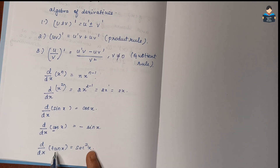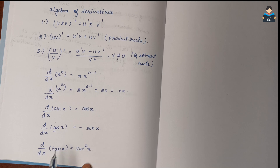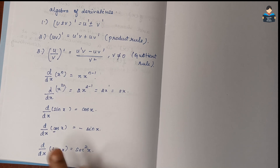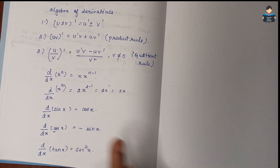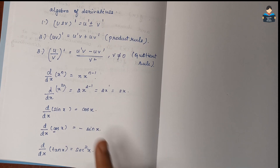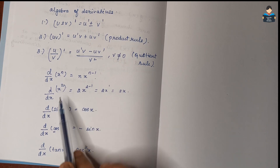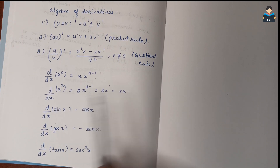To remember the trig derivatives: tan and sec are related using the identity 1 plus tan squared equals sec squared. So when differentiating tan x we get sec squared x, and when differentiating sec x we get sec x into tan x.